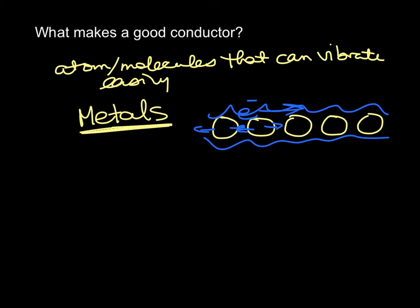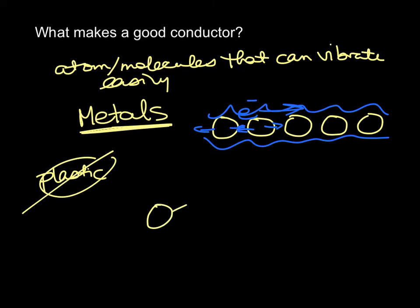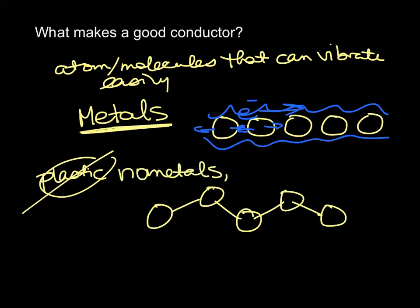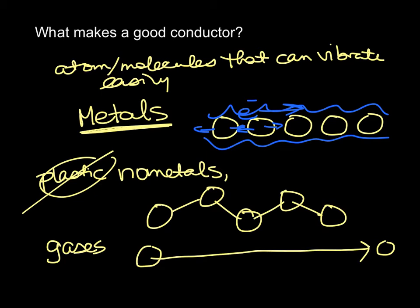Plastic is not a conductor. Plastic has atoms firmly attached to each other, so they kind of have to stay where they are. Non-metals and gases are poor conductors. Gases are horrible conductors because gas molecules are so far apart they rarely collide to transfer energy. Gases are the worst conductors.